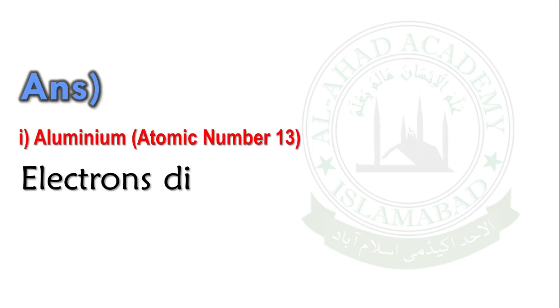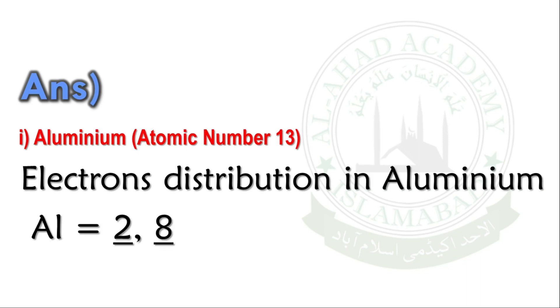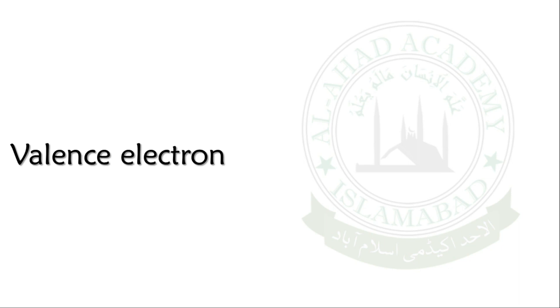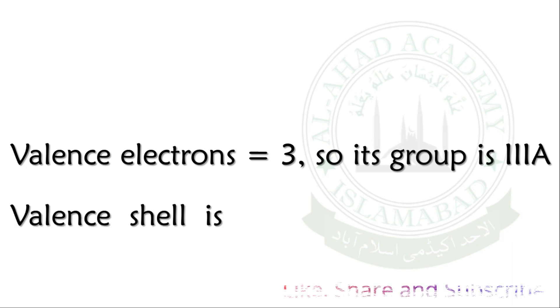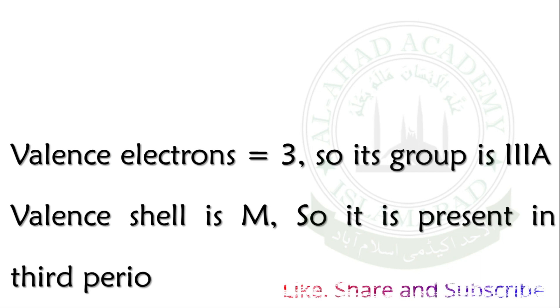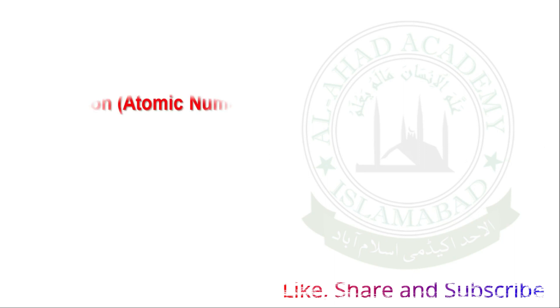Electronic distribution in Aluminium atomic number 13: First shell is 2, second shell is 8, and third shell is 3 electrons. The valence shell has 3 electrons. So Aluminum is in group number 3, and with 3 total shells, it's in period number 3.